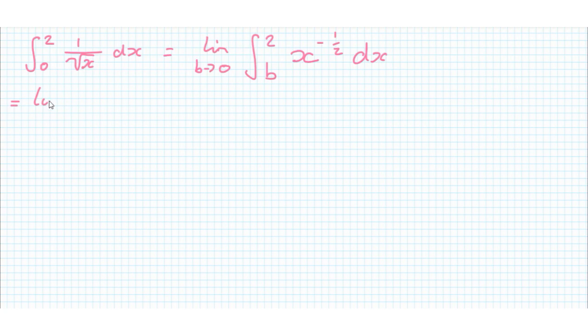That's equal to the limit as b tends to 0 of, so we add 1 to the power here so we get a half, and then we divide by our new power so divided by half gives us 2x to the half from b to 2.